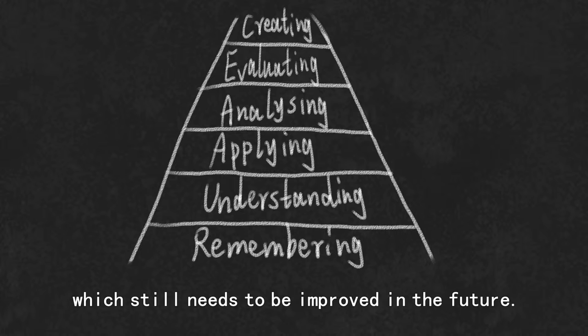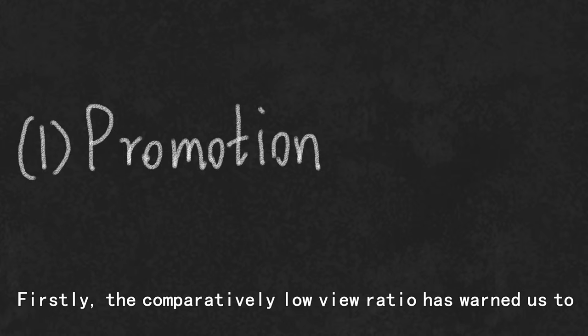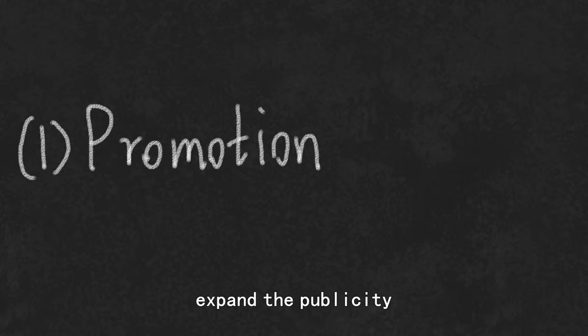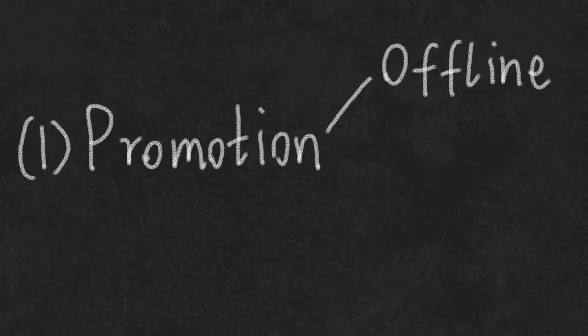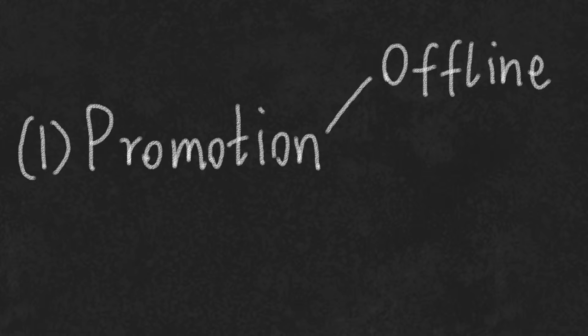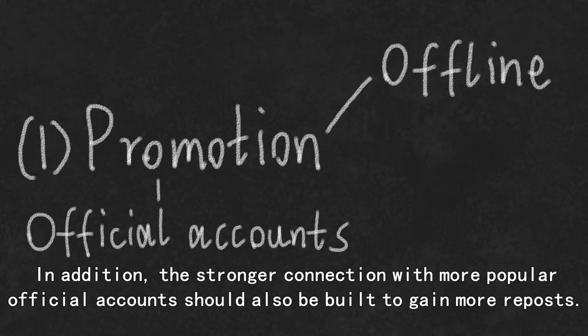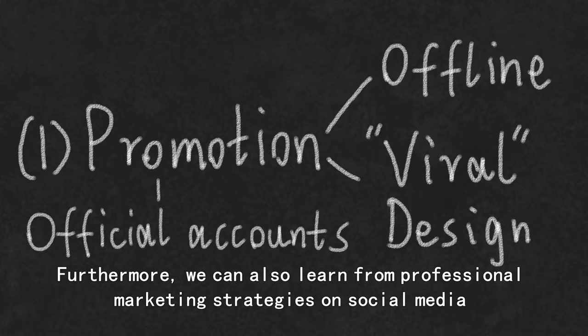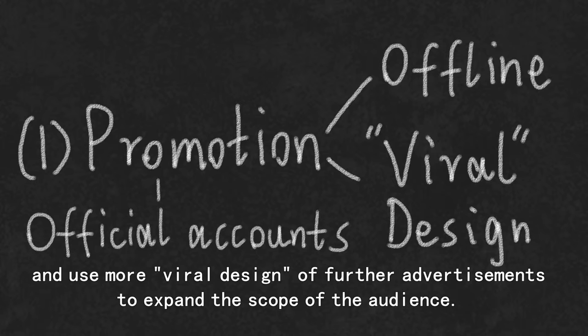Firstly, the comparatively low view ratio has warned us to expand publicity and apply more effective approaches to promote. As social media is our main stage for promoting, next time we can introduce more offline strategies such as campus talks with local staff at our new university. In addition, stronger connections with small popular offshore accounts should also be built to gain more reposts. Furthermore, we can learn from professional marketing strategies on social media and use small viral designs for further advertisements to expand the scope of the audience.